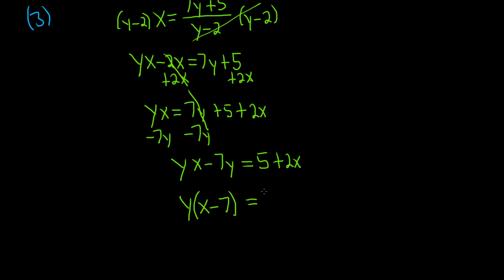And that's equal to 5 plus 2x. We're almost done. So because we factor out the y, now it's being multiplied by x minus 7. So to get rid of this x minus 7, we can just divide both sides by x minus 7.